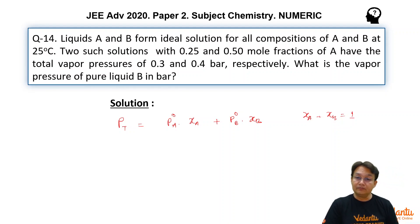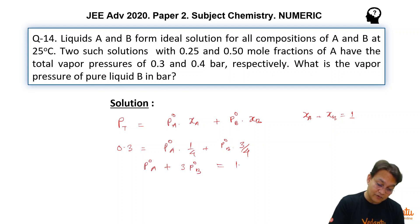Let us solve this problem by substituting the values. In the first case, pt equals 0.3, so 0.3 equals p⁰A times 1 by 4 plus p⁰B times 3 by 4, giving you the equation p⁰A + 3p⁰B equals 1.2. Let us call it equation number 1.